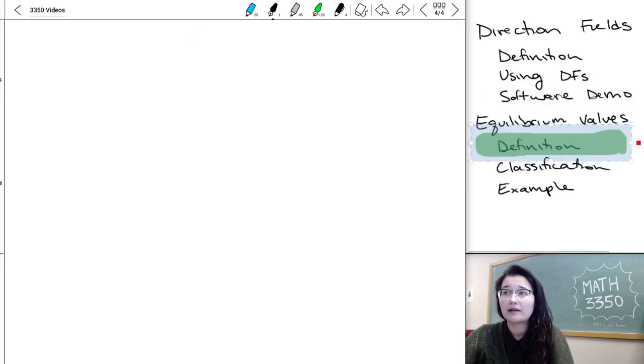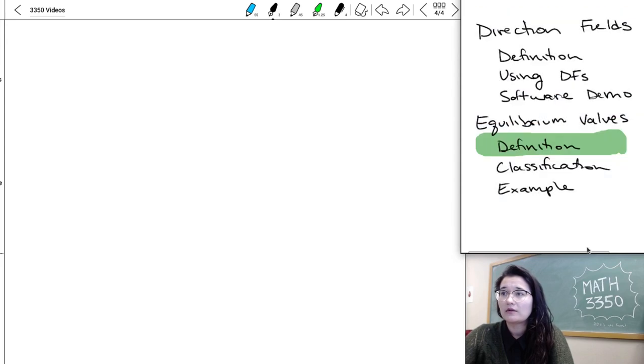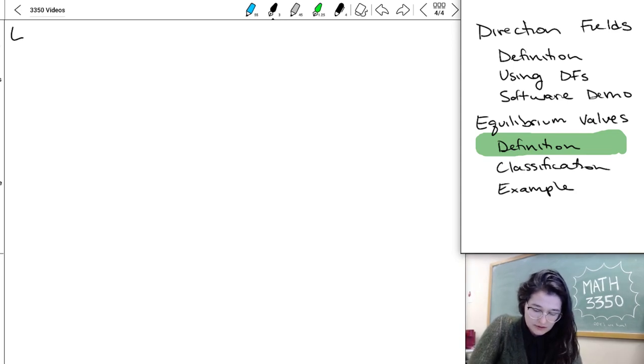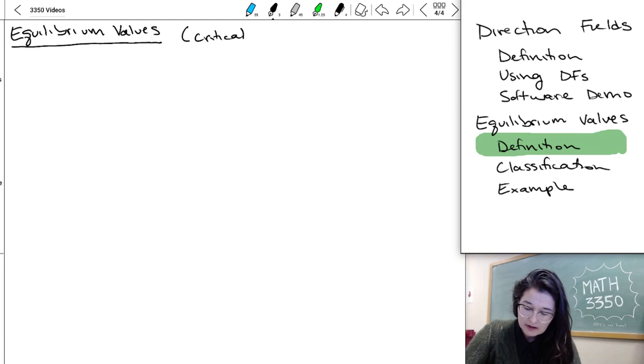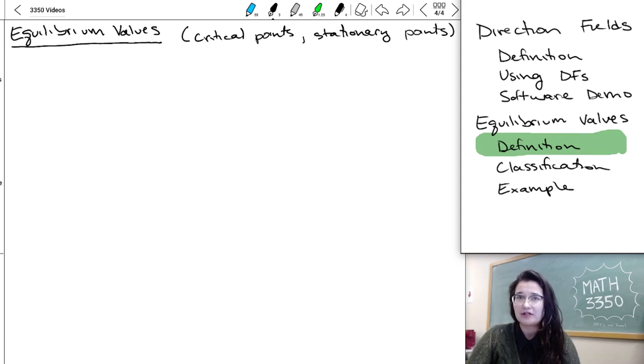So next up we're going to be talking about equilibrium values and there's a couple different names that this type of thing has. You might also see them called critical points or stationary points, and I'll sometimes use those words interchangeably. I will try to stick to equilibria for you all, but every once in a while I might slip up and call them critical points instead.